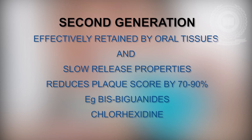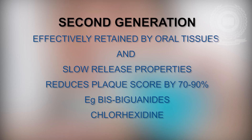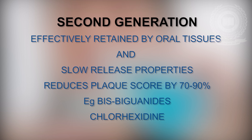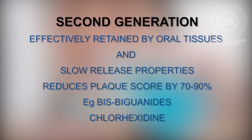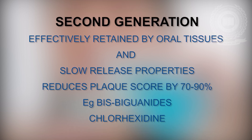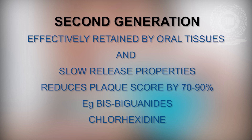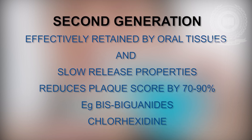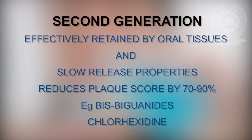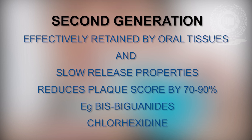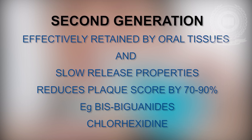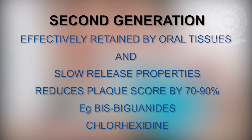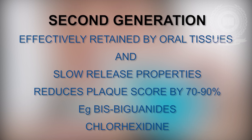The 2nd generation anti-plaque agents have a capacity to reduce overall plaque by about 70–90% because they have the capacity to retain better in oral tissues and exhibit slow-release properties. An example is bisbiguanides.